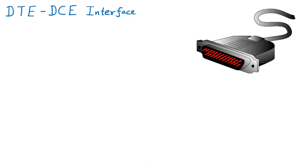We are continuing the topic of DTE and DCE interface. Last time we discussed that DTE is used for generating signals, like printers and fax machines, and DCE is for transmitting — modulating and demodulating. Now we are discussing the standards — what types of standards are available in the market for DTE and DCE.